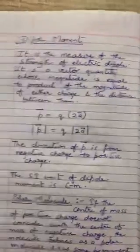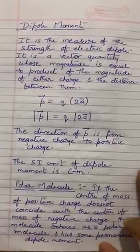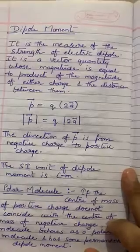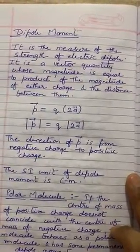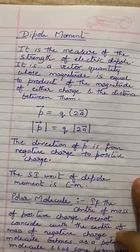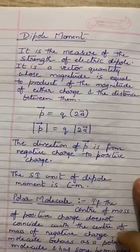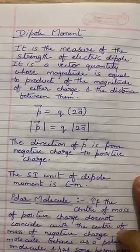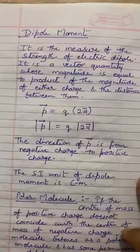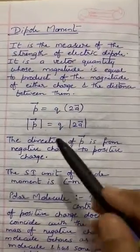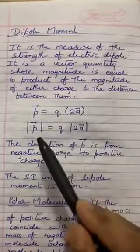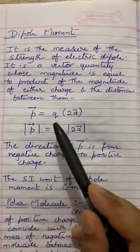Moving on to the next topic, that is dipole moment. When you have a dipole, the measure of the strength of the electric dipole is known as dipole moment. It is a vector quantity, as the direction of electric dipole moment is from negative to positive. The formula is given by vector P, which denotes electric dipole moment: vector P is equal to Q into 2a.